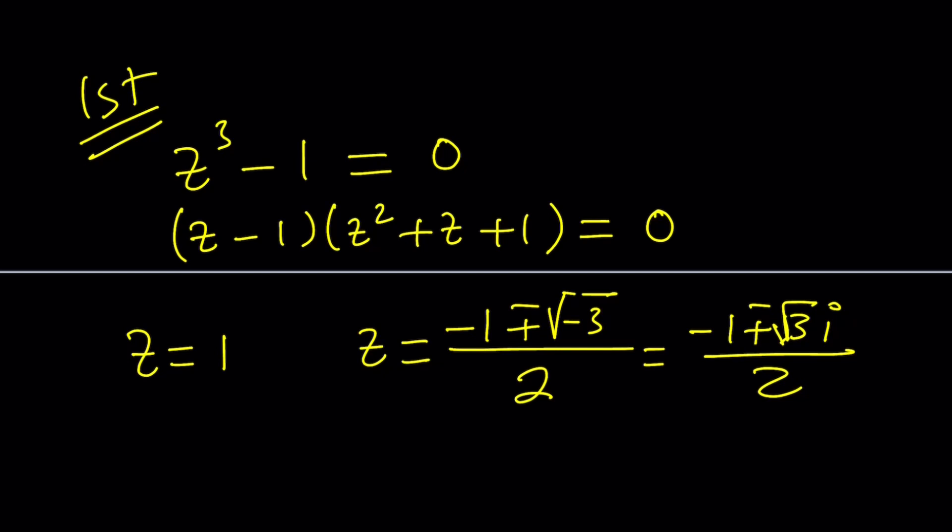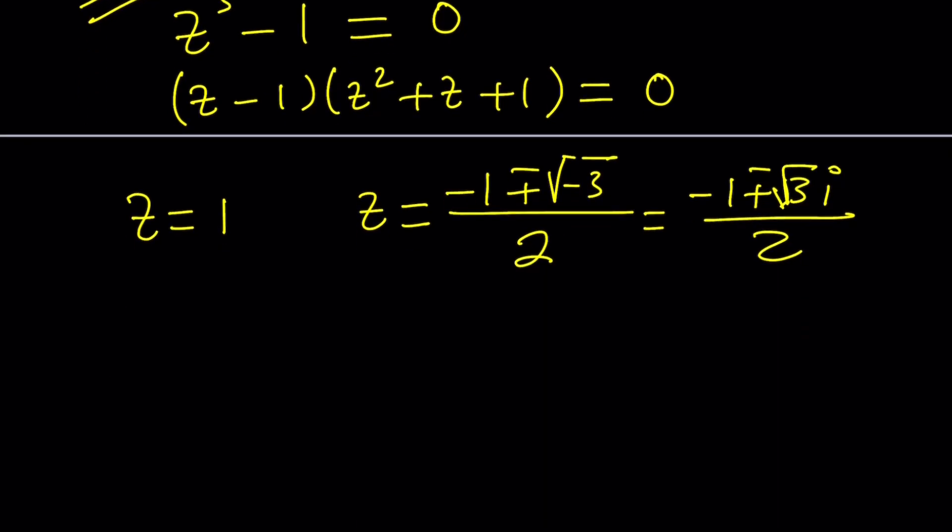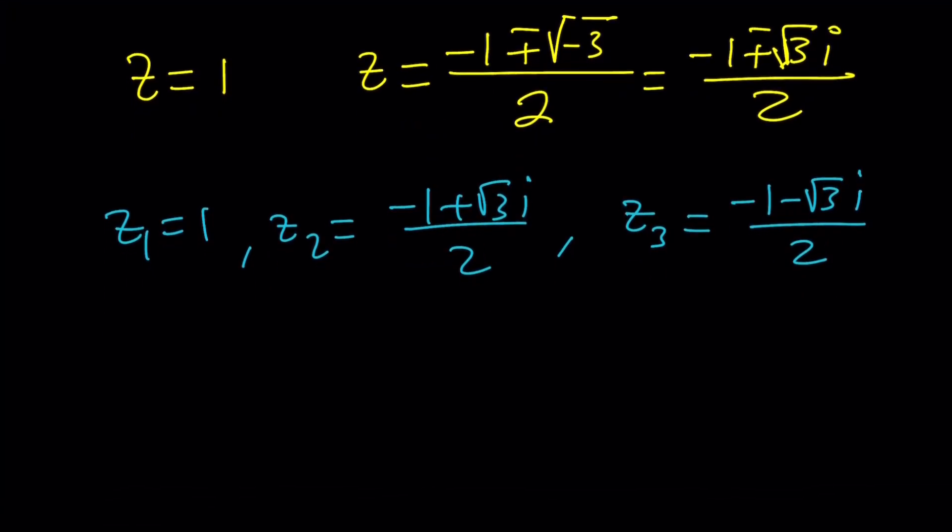So we've got three solutions. If you want to list them, you can write it as z sub 1 equals 1, z sub 2 equals negative 1 plus root 3i over 2, and z sub 3, which is the third solution, is negative 1 minus root 3i over 2. Let's go ahead and take a look at the coordinate system and what they look like.